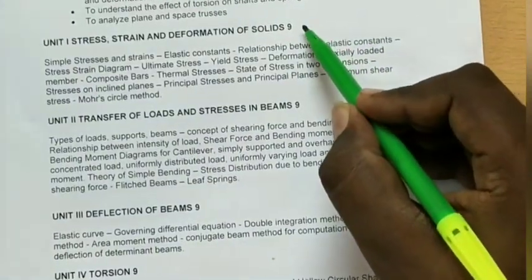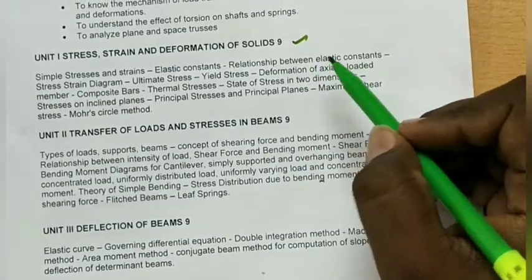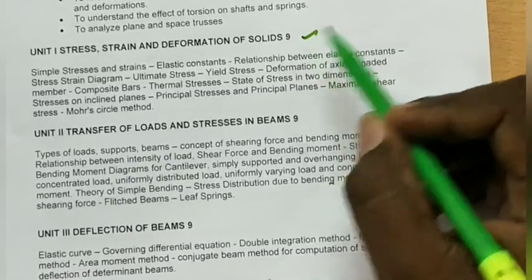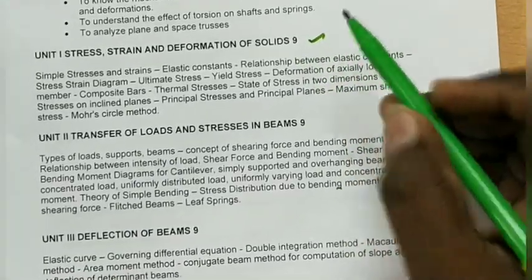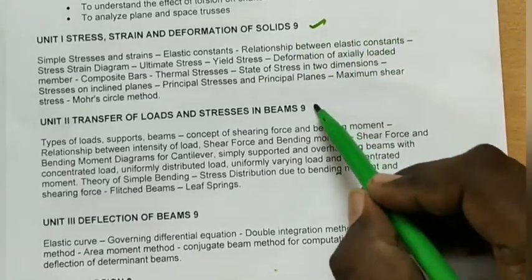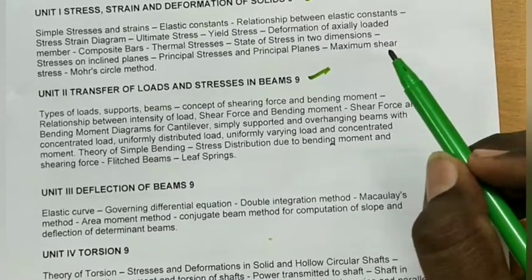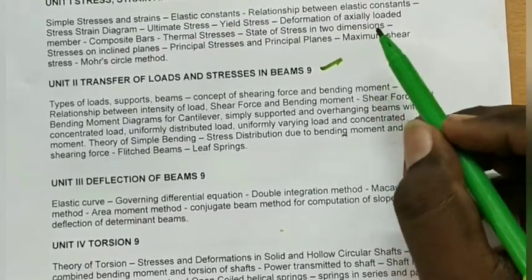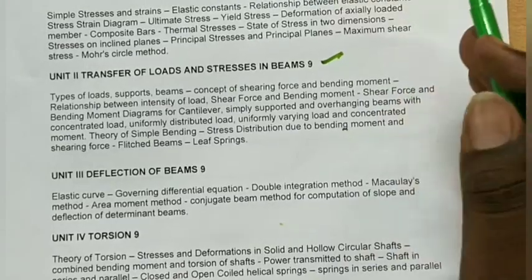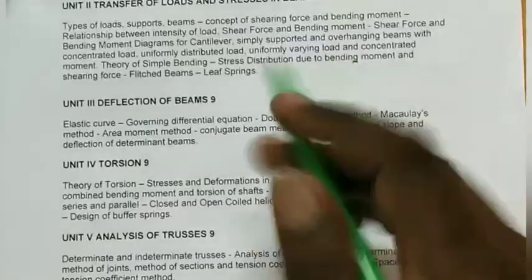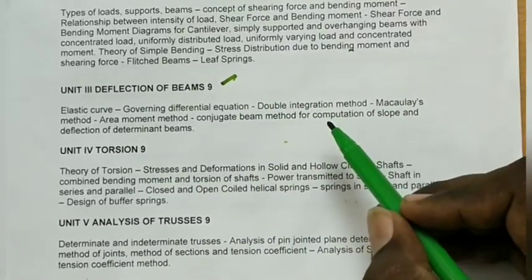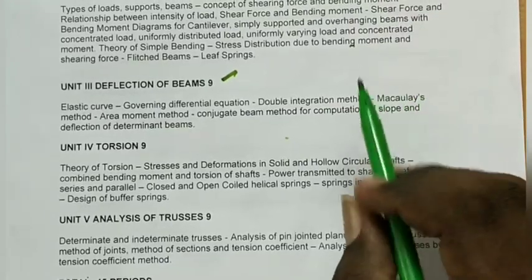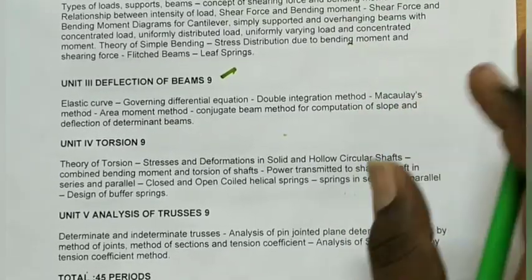Unit 1 is Stress, Strain and Deformation of Solids. Unit 1 also covers Stress, Strain and Elastic Constants, and that is related to problems. Unit 2 is Transfer of Loads and Stresses in Beams, covering shear force and bending moment diagram for beams. Unit 3 is Deflection of Beams, covering 4 methods, where we find slope and deflection.